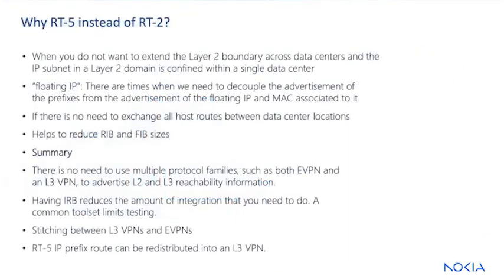So why would you choose one versus the other? It really boils down to a couple of factors: first, the MAC-to-IP binding assumed by RT2 advertisement, and second, how far do you want to extend your Layer 2 boundary in your data center architecture? If you're constraining L2 domains into a single data center and not allowing a subnet to exist in another data center, then RT5 is probably the way to go. Also, if you have floating IPs and don't want to associate the MAC to that specific IP, that's another reason to use RT5. If you do not want or need to advertise host routes between data centers, RT5 is also very key. This has the added benefit of helping to reduce FIB and RIB sizes, which can be important when using merchant silicon-based routers with limited table sizes. If your design uses EVPN locally inside a data center and L3 VPN in the WAN, RT5 is the functional equivalent of VPNv4 and VPNv6 routing, and it allows stitching between the EVPN and L3 VPN address families.